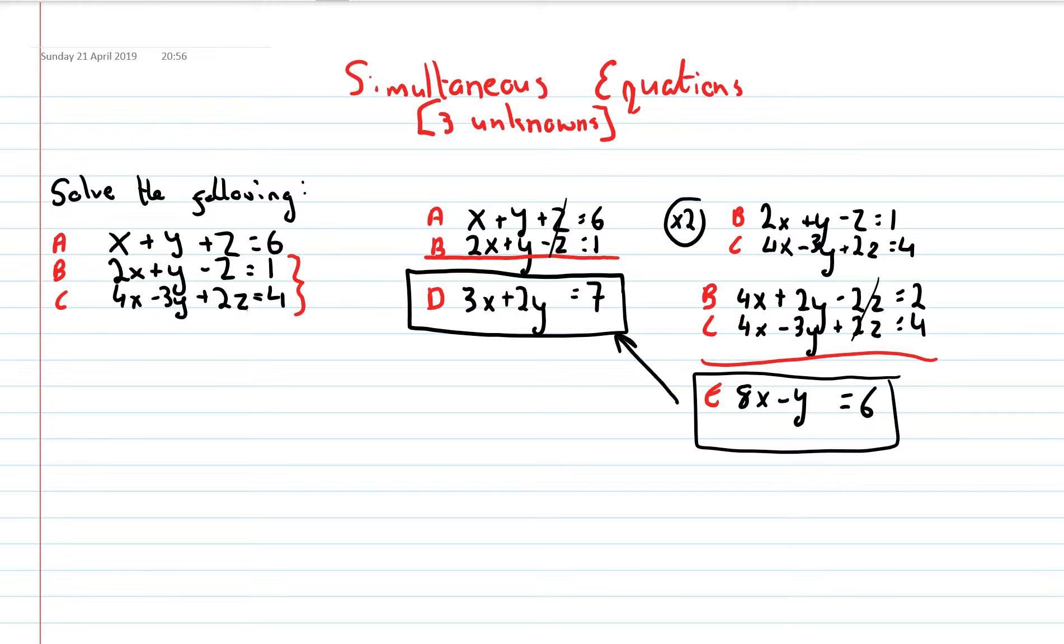So, now I'm going to use both D and E to find x and y. We're used to using two equations with two unknowns to solve for x and y. This is a revision of what we've done in junior cert, really, which is two equations to two unknowns.